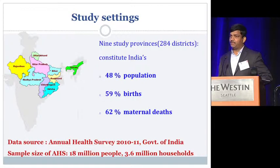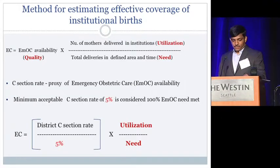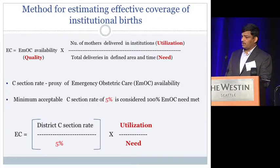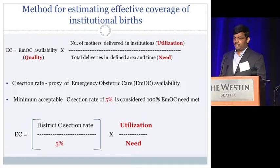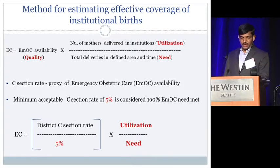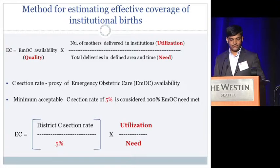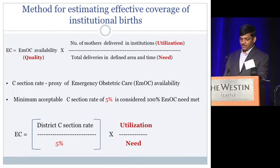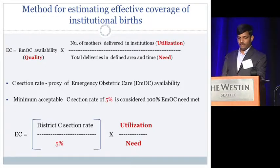We surveyed 18 million people in 3.6 million households from the nine provinces. We measure effective coverage of institutional birth in JSY using three important constructs: need, utilization, and quality. Need is total deliveries in a defined area and time; utilization is total number of mothers who delivered in health facilities; and quality is emergency obstetric care availability. We consider EMOC availability as a proxy to the quality of institutional care because institutional care is expected to reduce maternal mortality by providing timely access to emergency obstetric care.